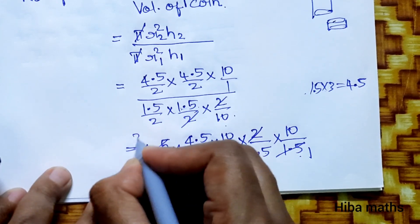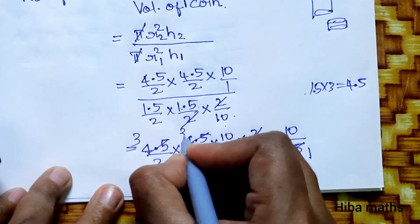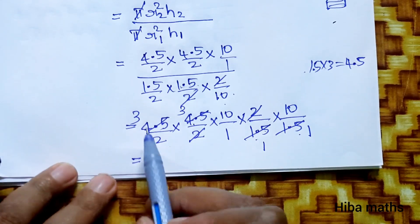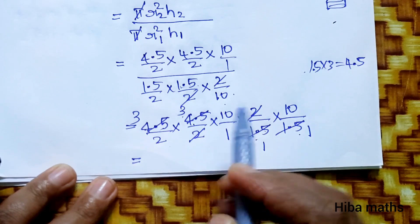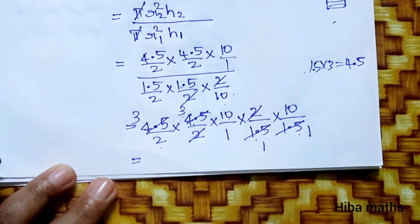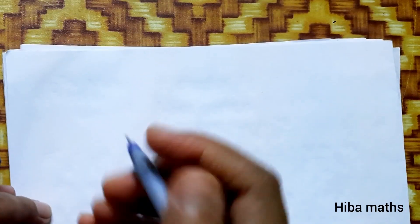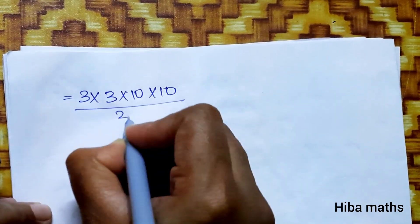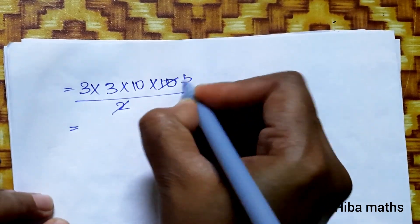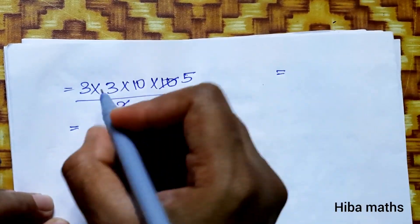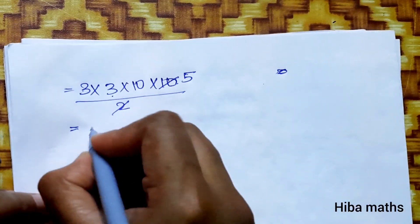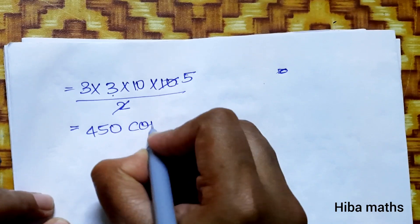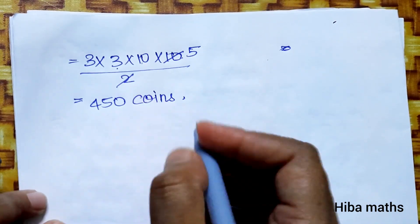Now we will solve and cancel. 1.5 into 3 is 4.5, so this is 1 time, this is 3 times, again this is 1 time, this is 3 times. Balance is 3, this is 3, this is 3 also. 10 divided by 2, we get 3 into 3 into 2 times 10 divided by 2. Balance is equal to 45. So we need 45 coins.